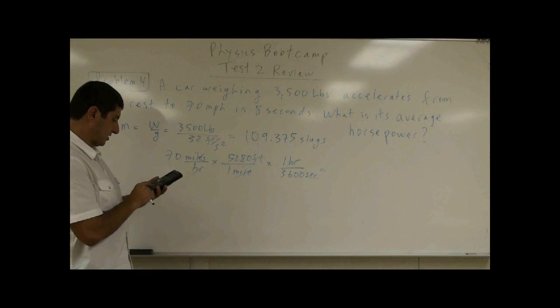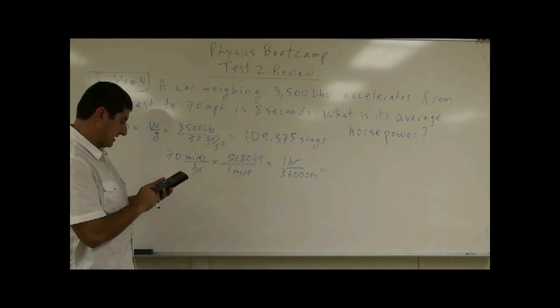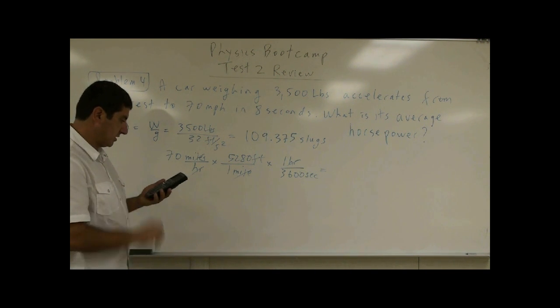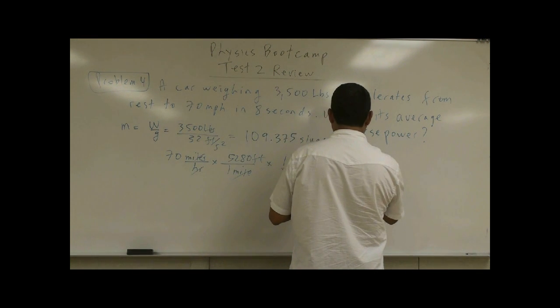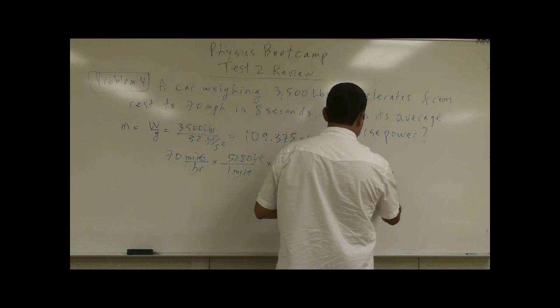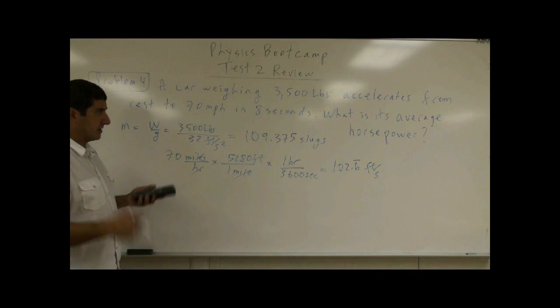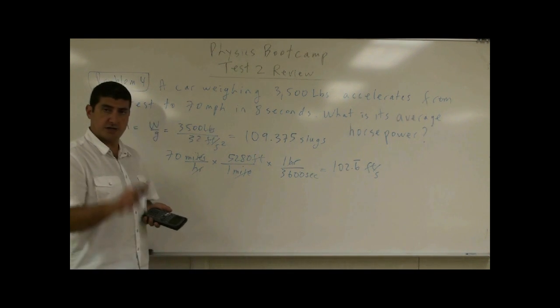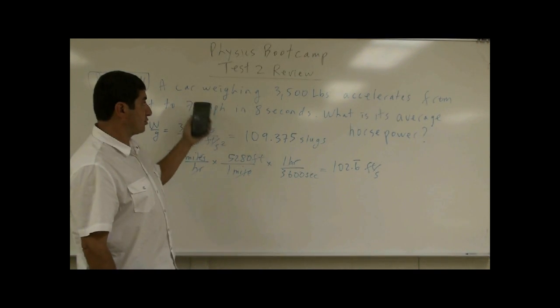70 times 5,280 divided by 3,600. So 102.6 repeating sixes feet per second. So the velocity of the car or the speed of the car is 102.6 repeating sixes feet per second. That's equivalent to 70 miles per hour.